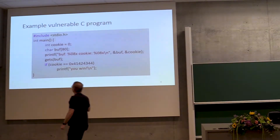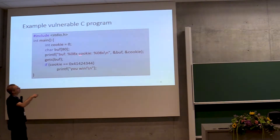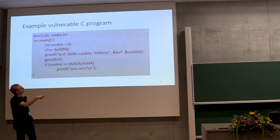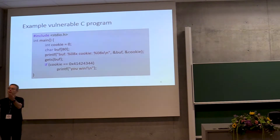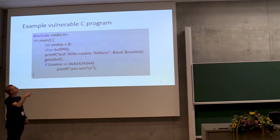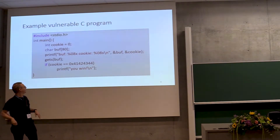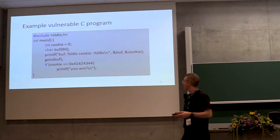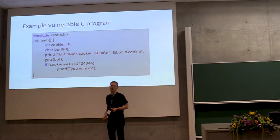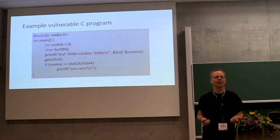It shows the effect of a buffer overflow in the simplest possible setting. The program is a simple main function that declares two local variables: an integer called cookie and a character array with 80 characters called buffer. It prints the addresses of these variables, reads from standard input until a newline, puts the characters into the buffer, then checks whether the cookie equals a specific hexadecimal number and prints 'you win' if it does. The question is: how do you make it print 'you win'?